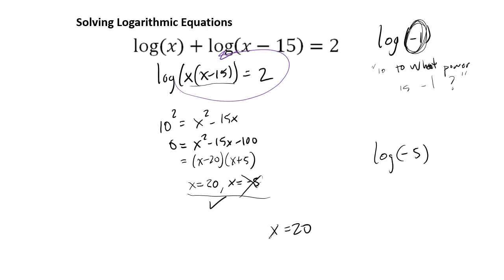So those are some actually fairly difficult problems — this is just about as difficult as it gets for solving logarithmic equations. We needed to employ the change of base formula — or that strategy — along with the properties of logarithms: the power rule, the quotient rule, and the product rule. All three of those things combined, as long as we know how to use them, allow us to solve basically any logarithmic equation.